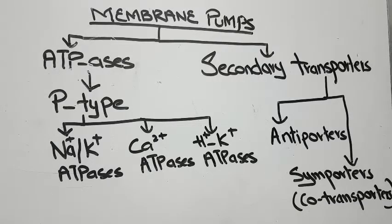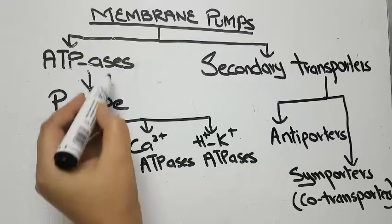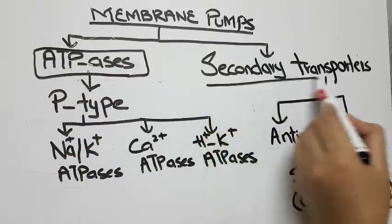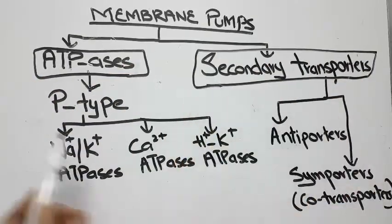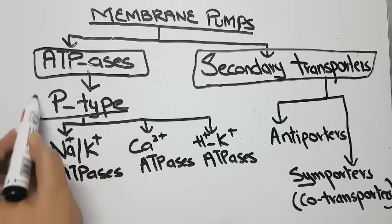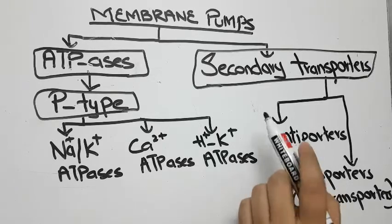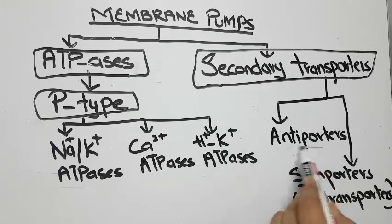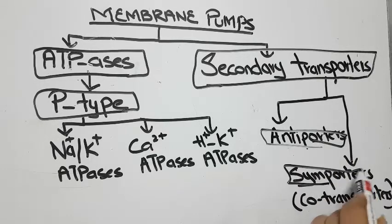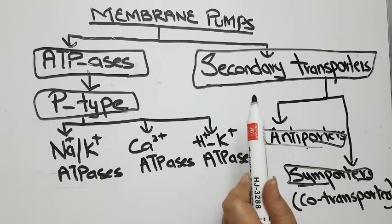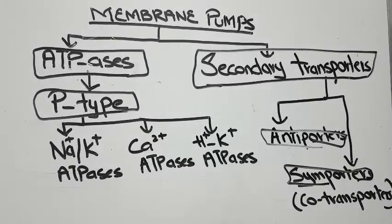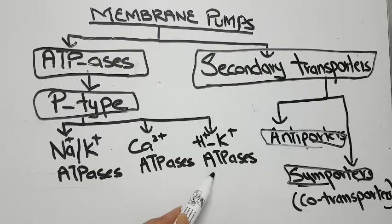We have two main types of membrane pumps: ATPases and secondary transporters. In ATPases we have the P-type ATPases, whereas in secondary transporters we have two types: antiporters and symporters. These two will be discussed later in the next video under the topic of secondary active transport. The P-type ATPases are of three types: sodium-potassium ATPases, calcium ATPases, and hydrogen-potassium ATPases or pumps.